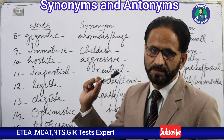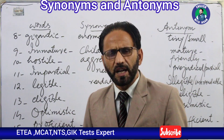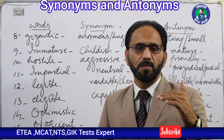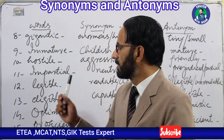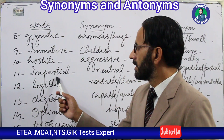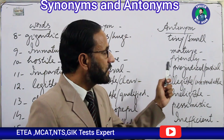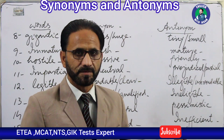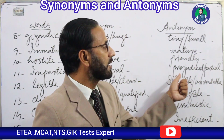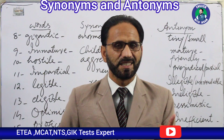Word eleven is 'impartial.' The synonym is 'neutral,' 'unprejudiced,' or 'not prejudiced' — any of these may appear as an option. That is why I discuss different synonyms and antonyms for one word, because in the test you need to recognize whichever synonym appears. The antonym for impartial is 'prejudiced,' 'partial,' or 'biased' — all three words have the same meaning, referring to a person who favours somebody.